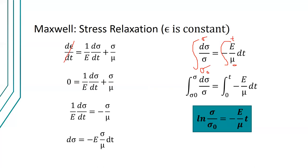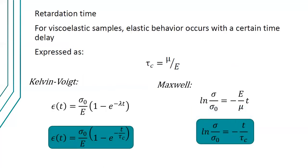This Maxwell stress relaxation result is more appropriate. For viscoelastic materials, the elastic behavior occurs with a certain time delay — whether in creep or stress relaxation — and we call this the retardation time, which is viscosity divided by Young's modulus (tau = mu/E), the reciprocal of lambda. For the Kelvin-Voigt model, substituting retardation time gives one equation; for the Maxwell model, another. These are the two equations used in problem solving in this course.